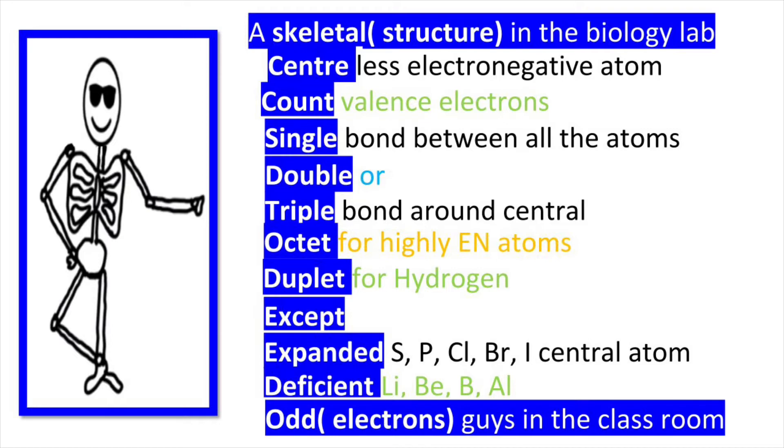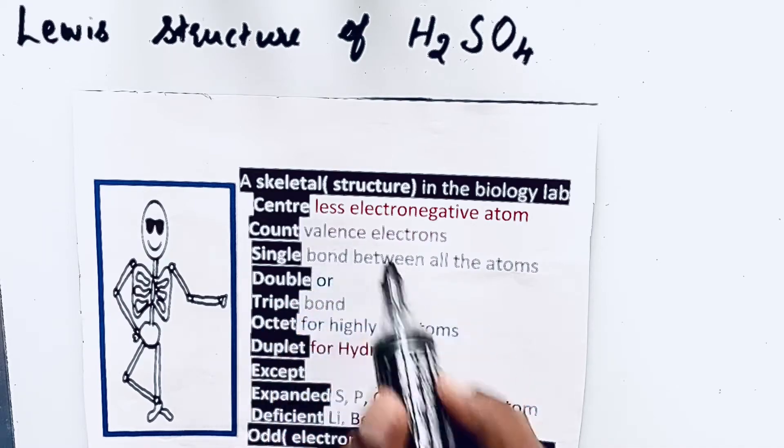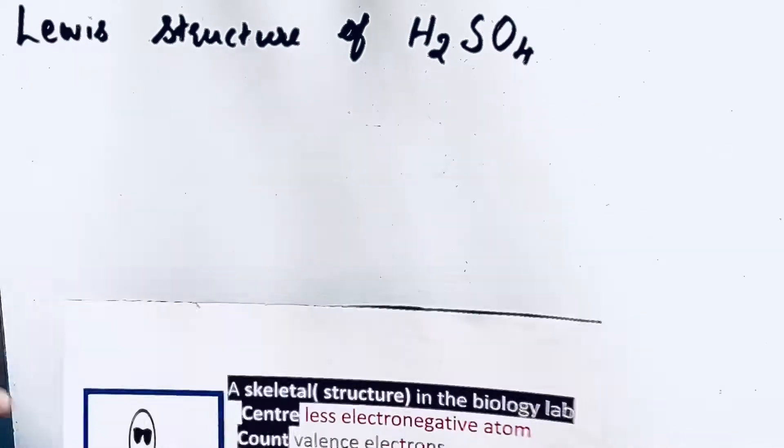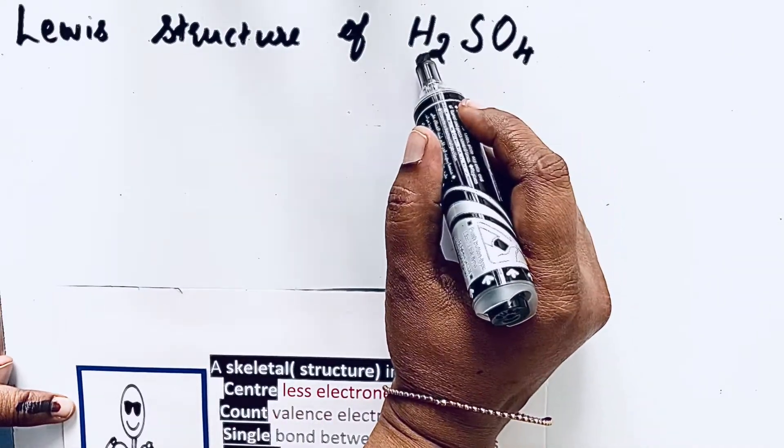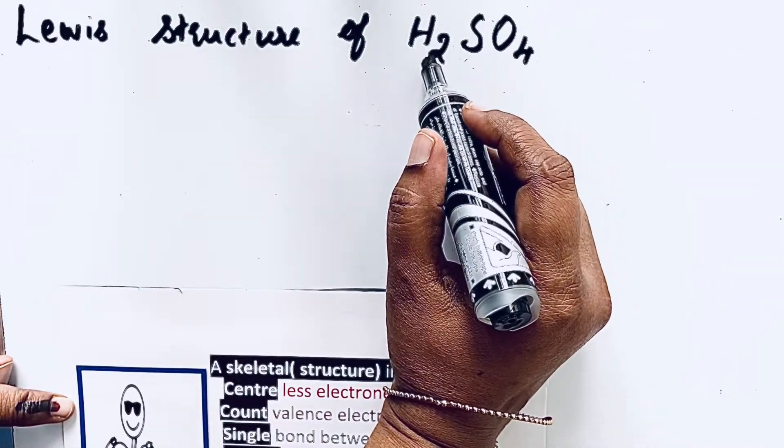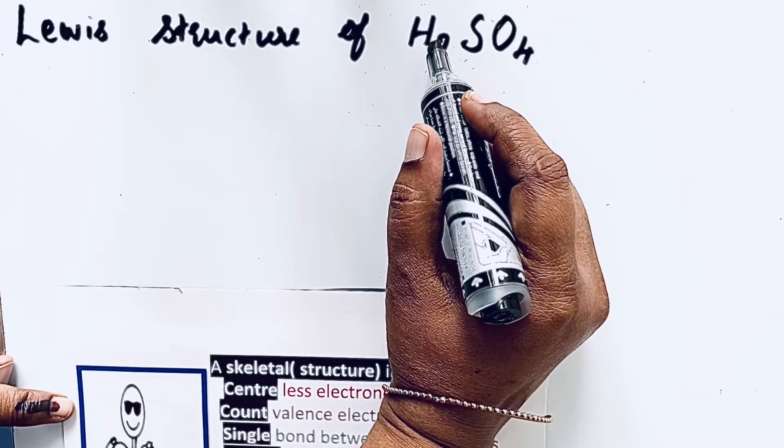Look at the first step: skeletal structure. When you write the skeletal structure, the second step is that the center should be the less electronegative atom. If you see H2SO4, hydrogen is less electronegative but we are not writing hydrogen as the center because it can satisfy only duplet configuration.